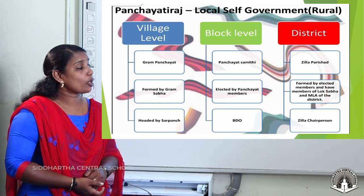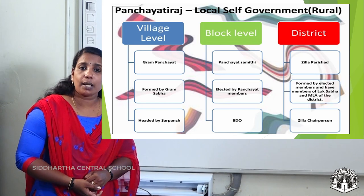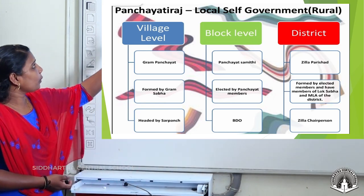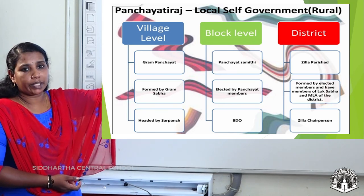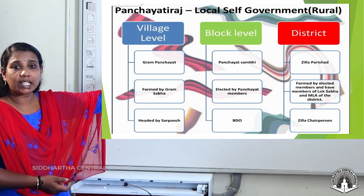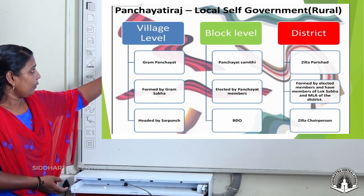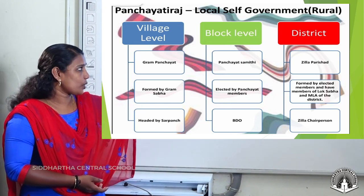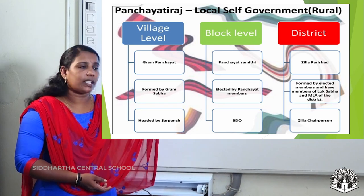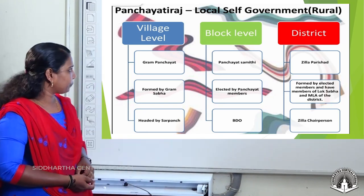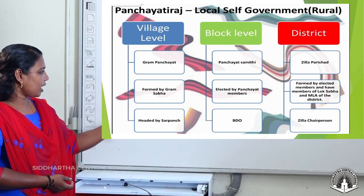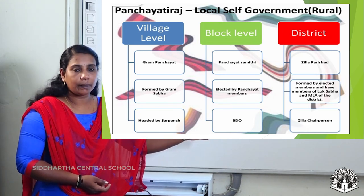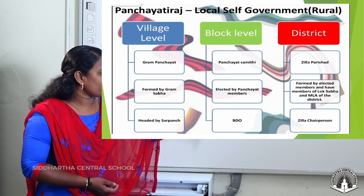The head of the Zila Parishad is the Zila Parishad Chairperson. So to summarize local government in the rural area: at the village level it is Gram Panchayat, headed by Sarpanch; at the block level it is Panchayat Samiti, headed by the Block Development Officer; and at the district level it is Zila Parishad, headed by the Zila Parishad Chairperson.